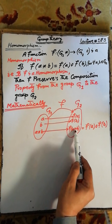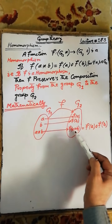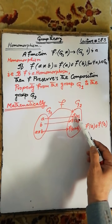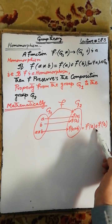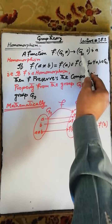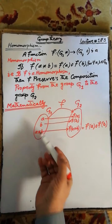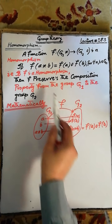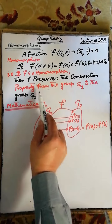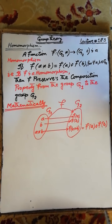The image of a ★ b is equal to f(a ★ b), and this element is also equal to the composition of f(a) and f(b) under the binary operation defined on the group G2. Therefore, the homomorphism preserves the composition property from the group G1 to the group G2.